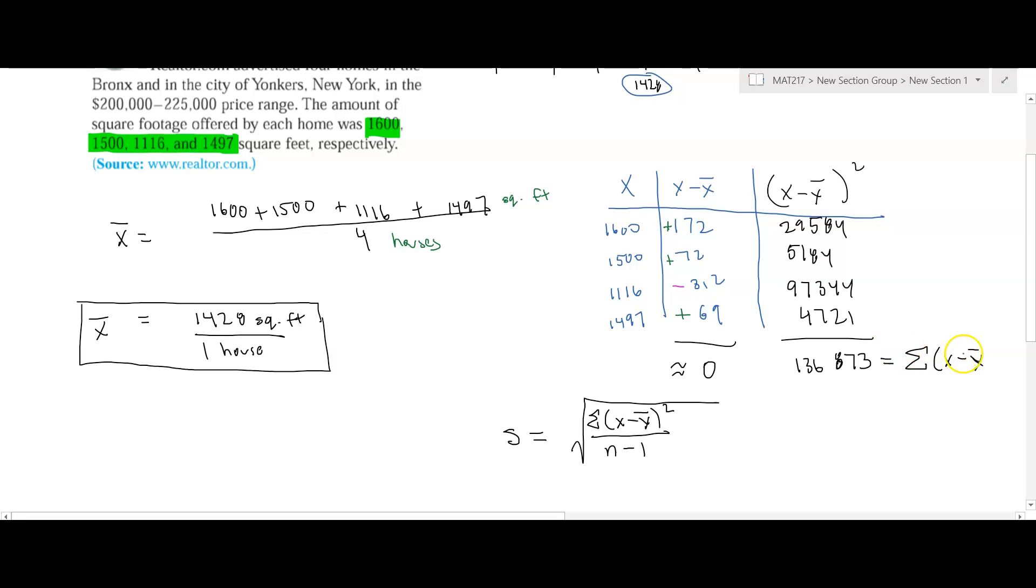Whoops, I did a parenthesis there in the square. So squared. And so now we know that this is going to be the square root of 136,873 divided by 4 minus 1, which is 3. And the square root of that divided by 3 comes out to 213.6, or about 214 square feet.